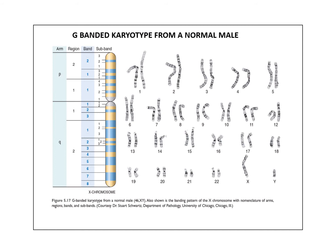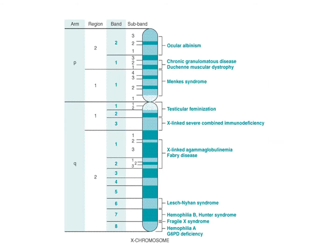Shown here is a G-banded karyotype from a normal male, and also shown is the banding pattern of the X chromosomes, with nomenclature of the arms, regions, bands, and subbands. Also shown here is the X chromosome with some of the more common chromosomal disorders and their specific locations in the different regions of the chromosomes.